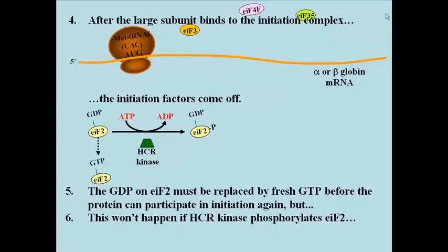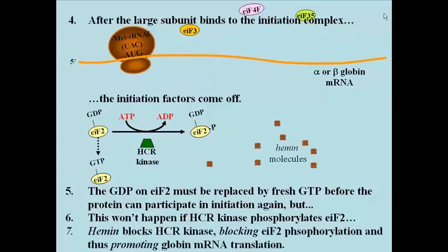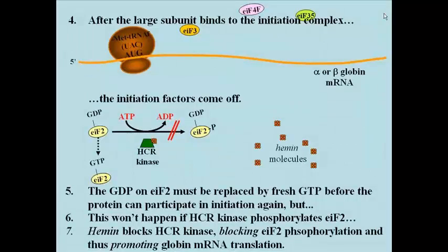On the other hand, if hemin levels are high in the cell, which would signal a need to make more hemoglobin, excess hemin can bind to HCR kinase at an allosteric site. The resulting conformational change then blocks the kinase activity so that GTP can replace GDP on EIF2, and globin mRNA translation can continue.